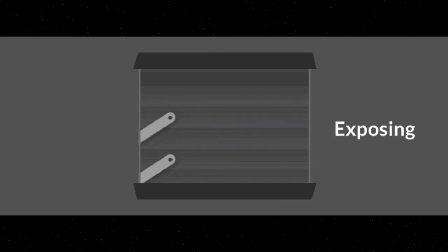Shutter speed is the amount of time the sensor is exposed to light. If you set it to 1/10th of a second, the shutter opens for 1/10th of a second and then closes.